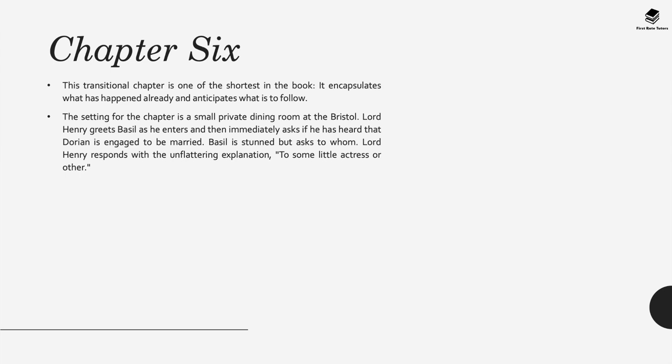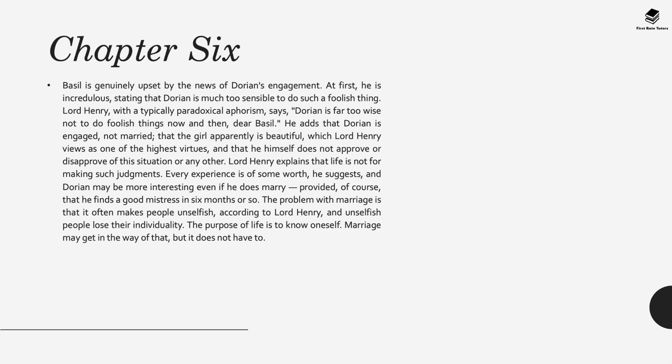In chapter six, a transitional and one of the shortest chapters, the setting is a small private dining room at Bristol. Lord Henry greets Basil as he enters and immediately asks if he's heard that Dorian is engaged to be married. Basil is really stunned, and Lord Henry tells him he will be marrying an actress. Basil seems genuinely upset—incredulous firstly because this woman is from a different class, but also unhappy that Dorian hadn't told him. Lord Henry is somewhat more passive about it, explaining that life is not for making such judgements. Every experience is of some worth, he suggests, and maybe Dorian might be even more interesting if he marries. For Lord Henry, the problem with marriage is that it often makes people unselfish, and unselfish people lose their individuality—the purpose of life is to know oneself in a very selfish way.